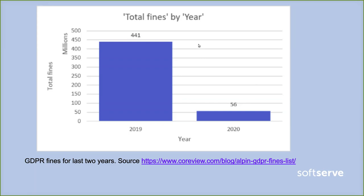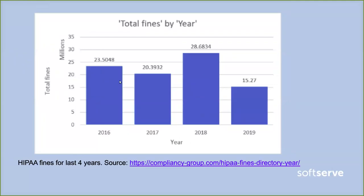Fines related to HIPAA compliance violations are also in the millions of dollars each year — approximately 20 to 30 million dollars of fines issued annually. These numbers relate to only a small number of companies; for example, 30 million dollars may account for only 10 companies, meaning each company can receive an average of 3 million dollars in fines. There's also reputational damage on top of that.